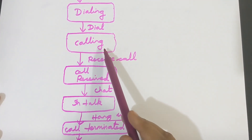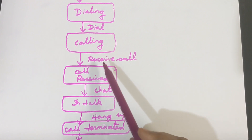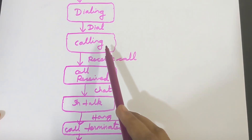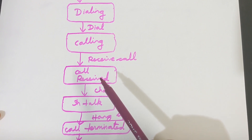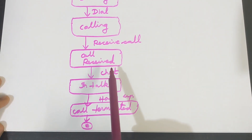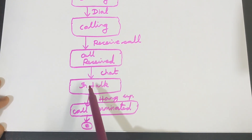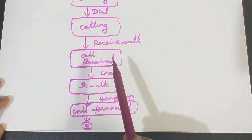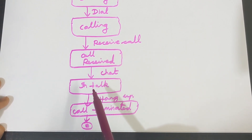Next is 'call received.' From calling state, it will not move to call received without an event — the event is 'receive call.' Only when receive call happens will the state change from calling to call received, meaning the other person has received the call. From call received, it will not directly change to 'in talk' without the event 'chat' happening. Only when chat happens will it change to in-talk state — the person needs to pick the call to have a conversation.